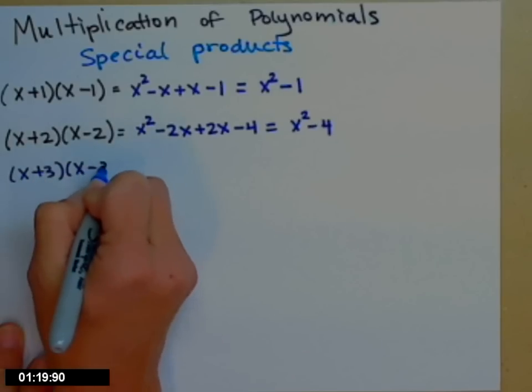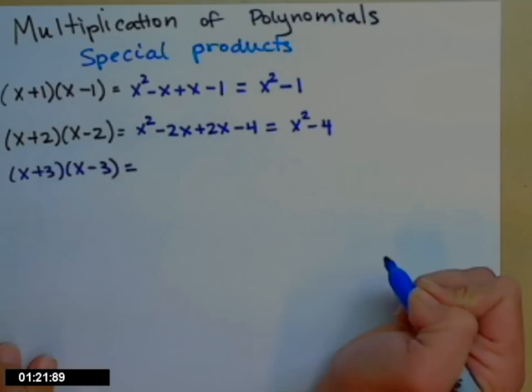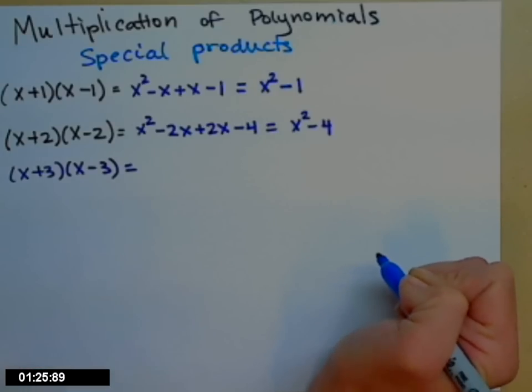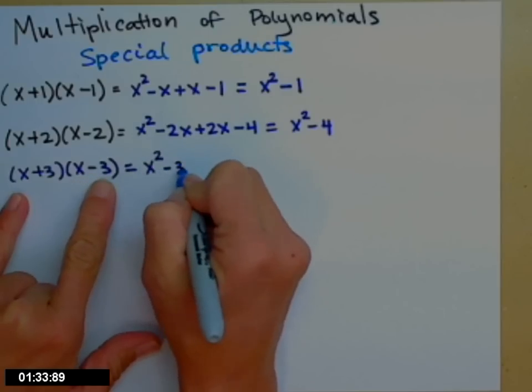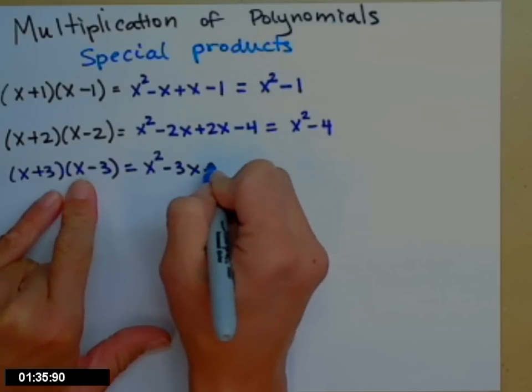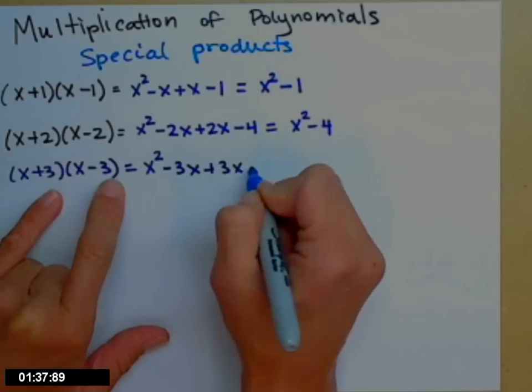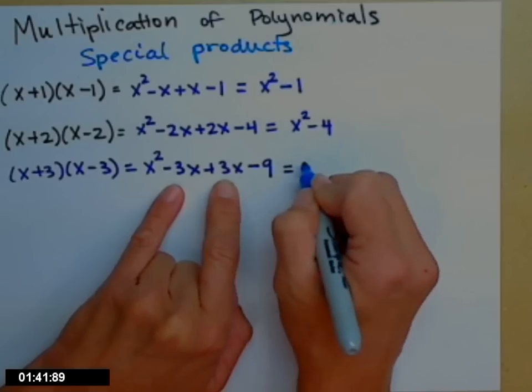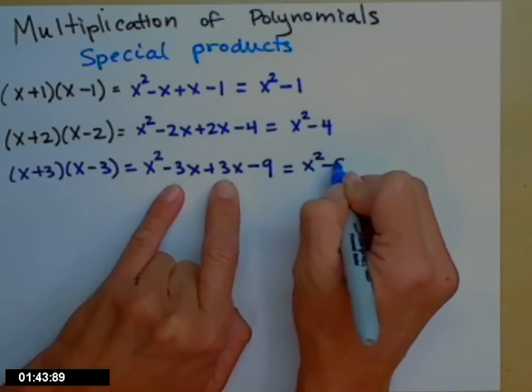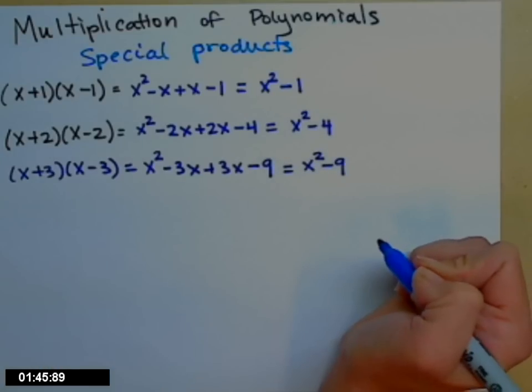x plus 3 times x minus 3. Do you think you're ready to write it down without FOILing it out? Maybe not yet. Let's do one more just to make sure. Go ahead and write down your guess. Here we go. First, x squared minus 3x plus 3x minus 9. Again, one positive, one negative. Those guys add out, and all I get left with is x squared minus 9.